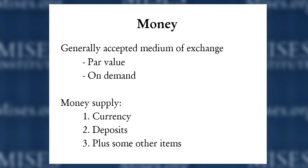Once you understand these two criteria, you can go out and identify what is actually functioning as money. Currency — the notes and change in your pocket — clearly has these qualities. Your bank deposit account also shares them: the value is available at a predefined amount and on demand. For the purpose of this lecture, we'll limit the money supply to the stock of currency plus the total amount of deposits in the economy, ignoring other relatively minor items.